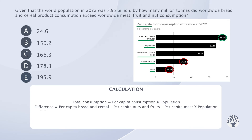So we use the values from the chart in that formula: 78.48 minus 34.95 minus 18.89, multiplied by 7.95 billion, which is 195.9 billion kilograms, which converts to 195.9 million tonnes. But even without that conversion, we instantly recognise the solution from among our answer options. It's E.